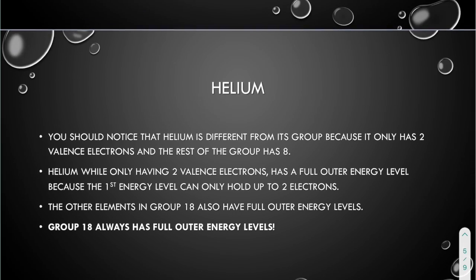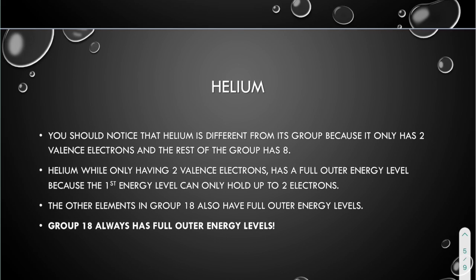Let's get more specific about helium. You should notice that helium is different from its group because it only has two valence electrons and the rest of the group has eight. Helium, while only having two valence electrons, has a full outer energy level. Its valence shell is full because the first energy level can only hold up to two electrons. So even though it does only have two, that energy level is full. The valence shell is full. The other elements in group 18 also have full outer energy levels or full valence shells.